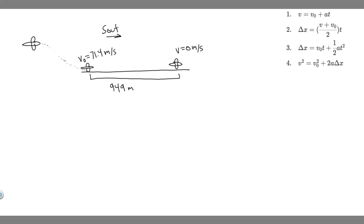In this problem we're told a jet lands with a speed of 71.4 meters per second traveling due south, and comes to rest in 949 meters. Assuming the jet slows with constant acceleration, find the magnitude and direction of its acceleration. In order to solve this problem, the first thing you want to do is draw what's going on.